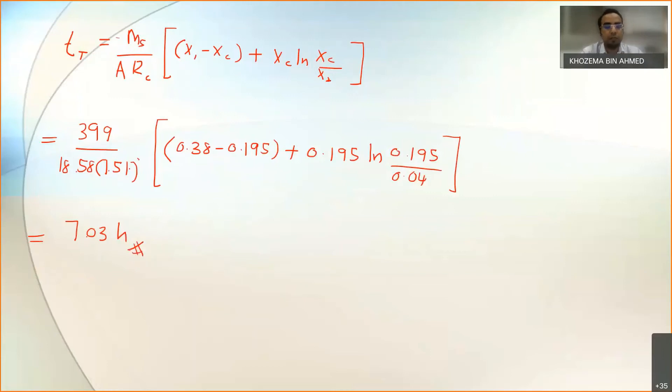So this is the final answer. You can also try using the equations for the constant rate period separately and then finding the value for the falling rate period separately and adding these two up. You should be getting almost the same answer. Now remember one more thing: if you notice here I did not mention about the units.